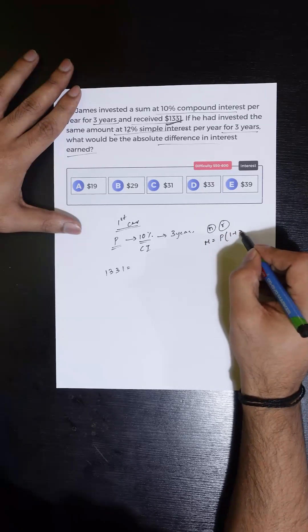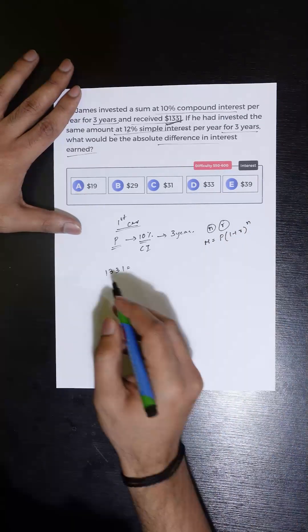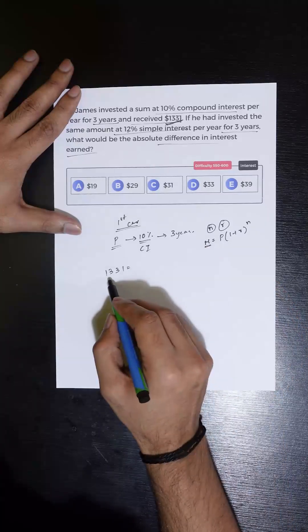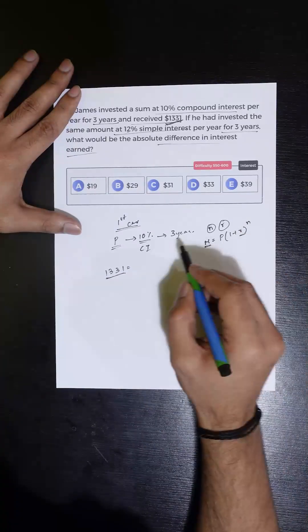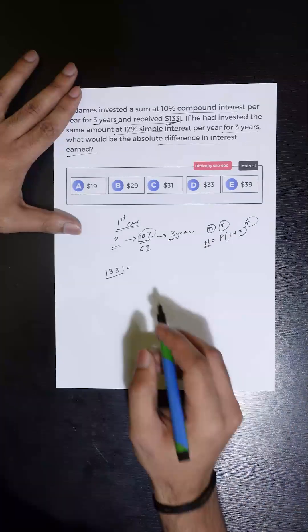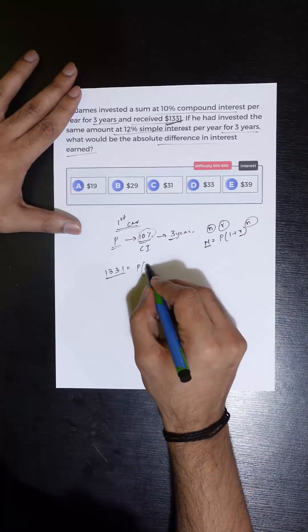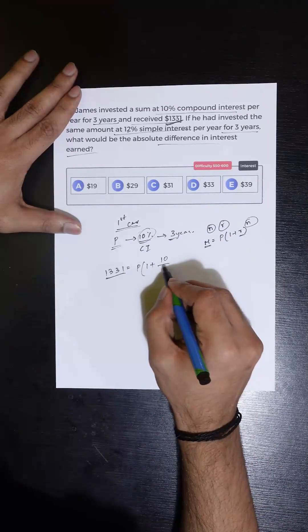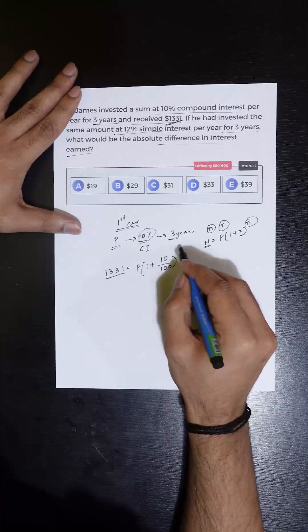Here the money is given to be 1331, the rate of interest is 10%, and the number of years is 3. So the value of P can be calculated as: P times (1 + 10/100) to the power of 3, which is P times 1.1 cubed equals 1331.